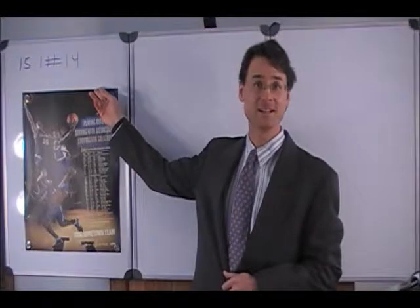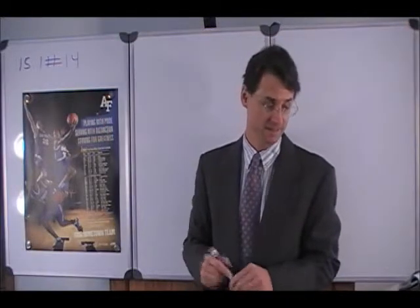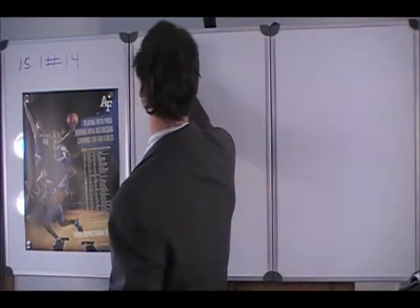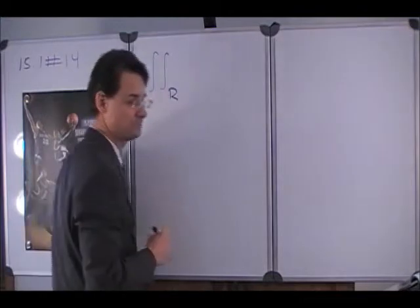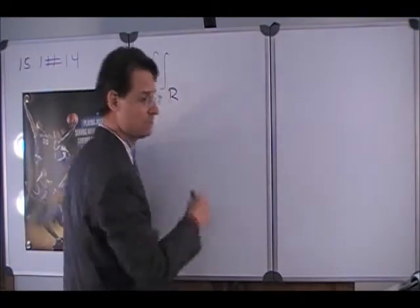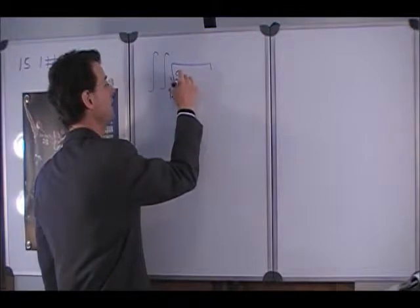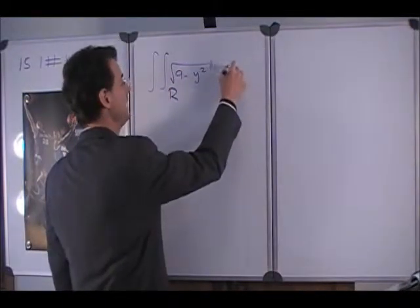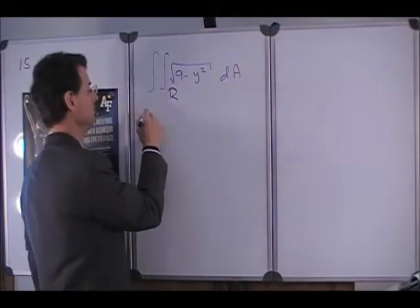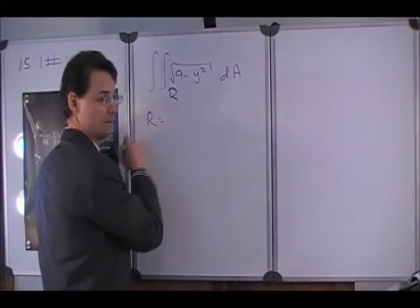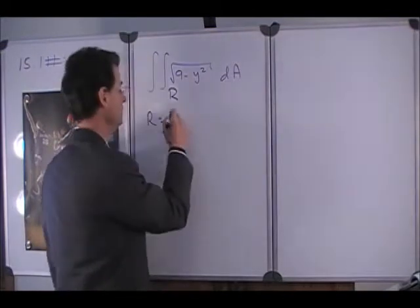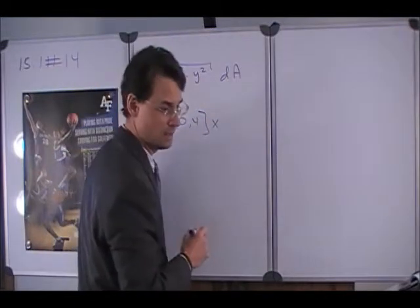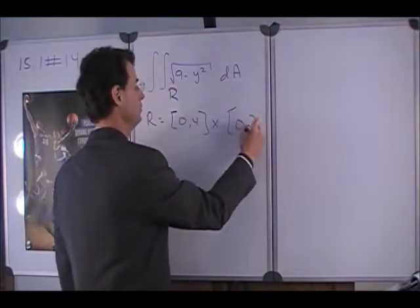So today we're having a look at section 15-1, number 14, and it asks us to consider the integral over a region. The integrand is the square root of 9 minus y squared, and dA, and it's over the region r given by the region from 0 to 4, and 0 to 2.